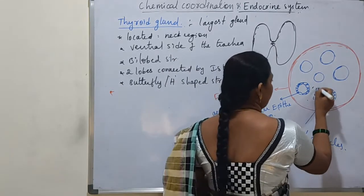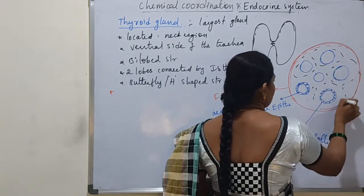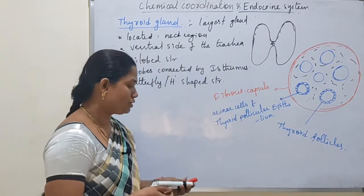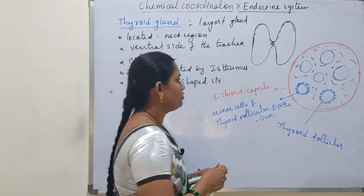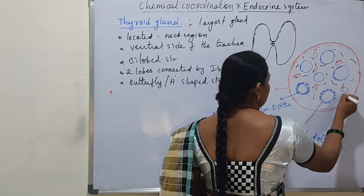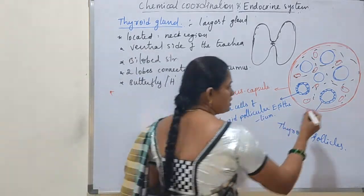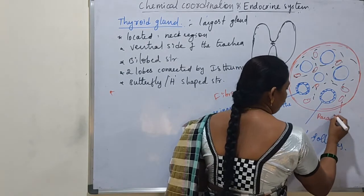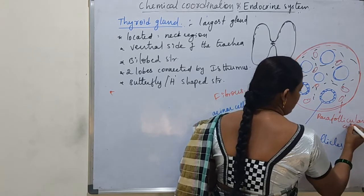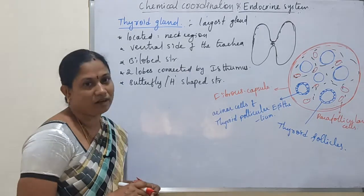In between the thyroid follicles, a loose connective tissue is present. In the loose connective tissue, some cells are scattered. These cells are called parafollicular cells. This is the overall structure of the thyroid gland.